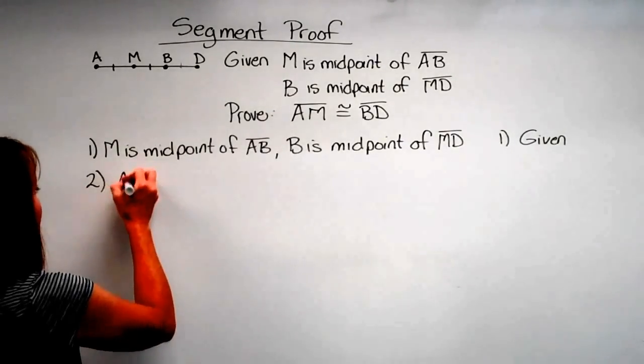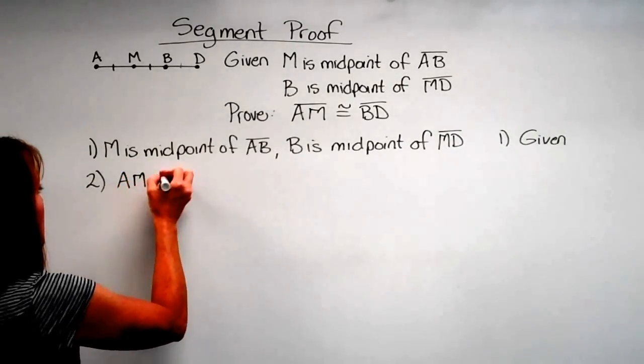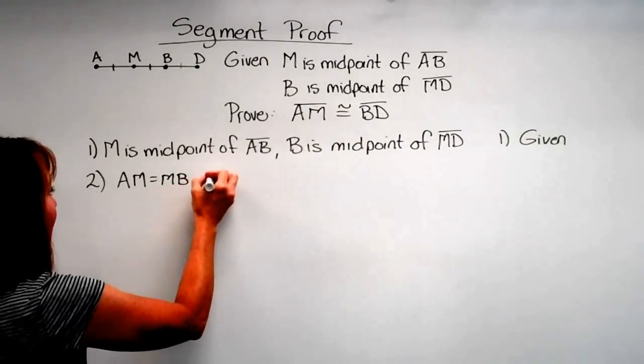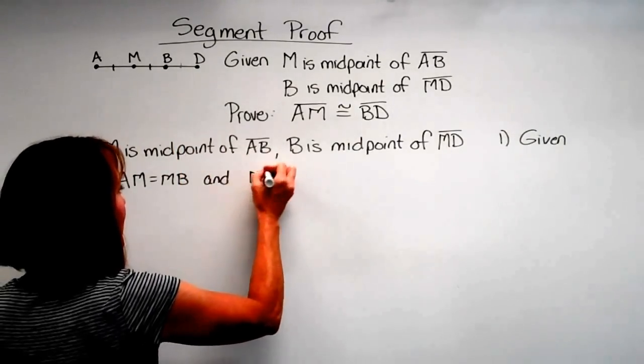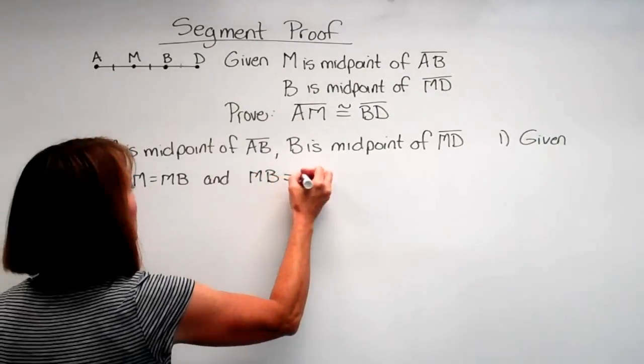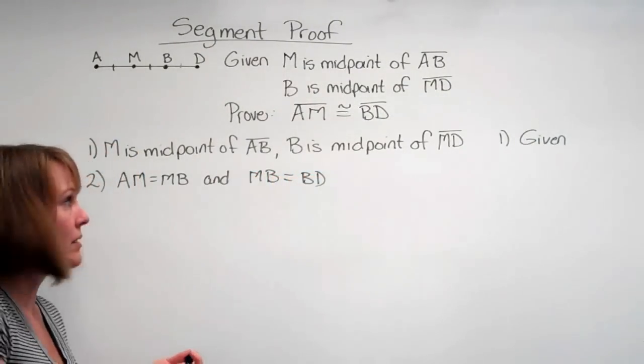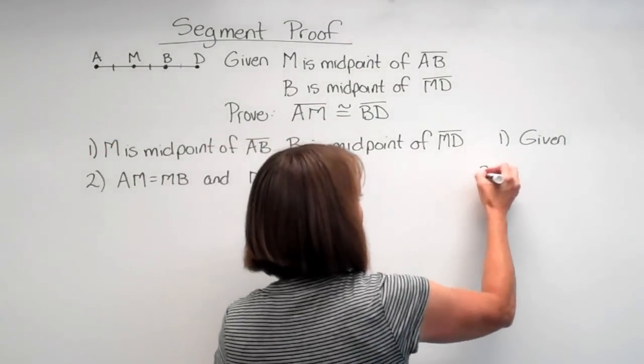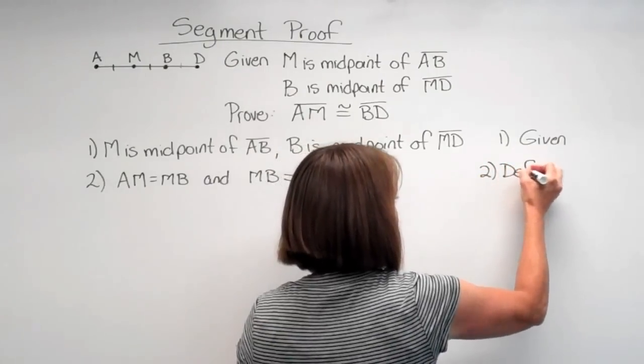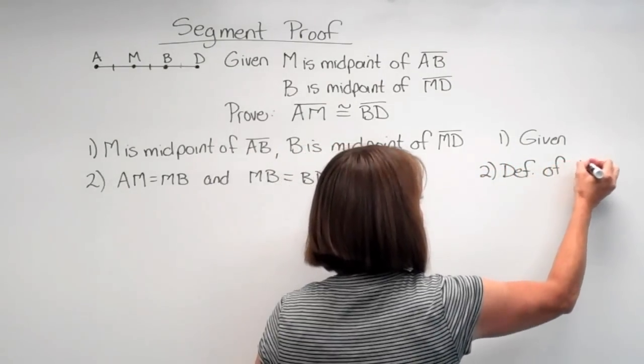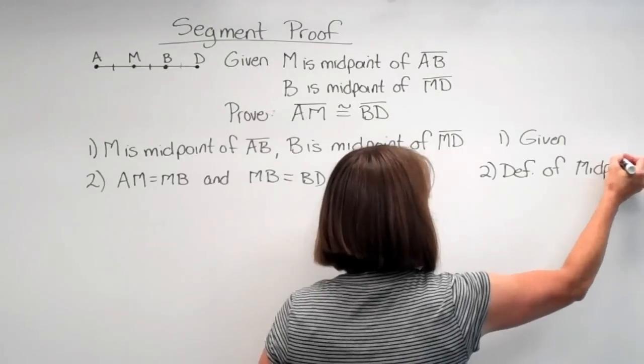So let's write that down. We say that AM is equal to MB, and at the same time we can say that MB is equal to BD. How do we know that? Well, that's the definition of a midpoint.